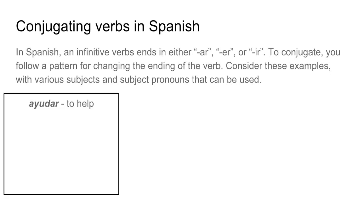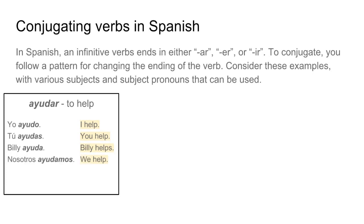An AR verb example is 'ayudar,' which means 'to help.' If I want to say 'I help,' I say 'yo ayudo.' If I want to say 'you help' — second person singular — 'tú ayudas.' If I want to say 'he or she helps' — for example, Billy — 'Billy ayuda.' If I wanted to say 'we help' — first person plural — 'nosotros ayudamos.' In Spain, they use 'vosotros,' which means 'y'all' — an informal plural second person — 'vosotros ayudáis.' And finally, 'ellos ayudan' — they help.